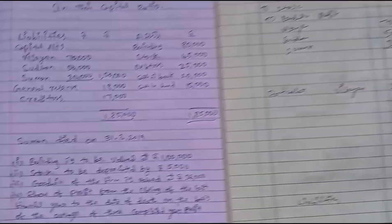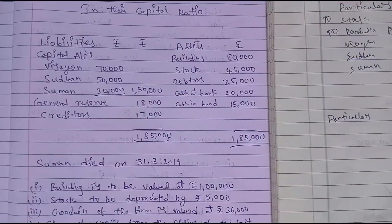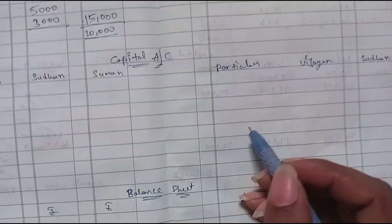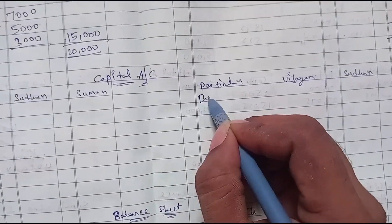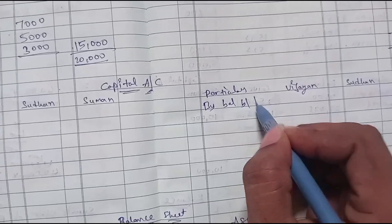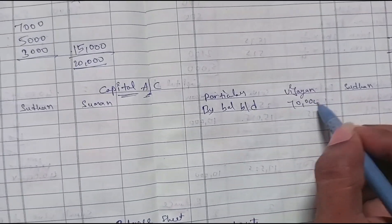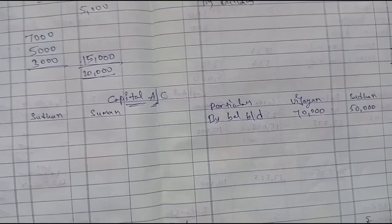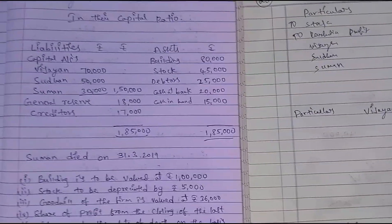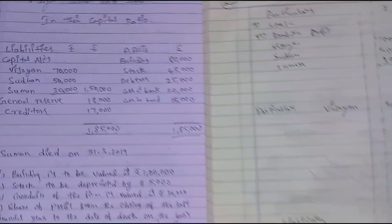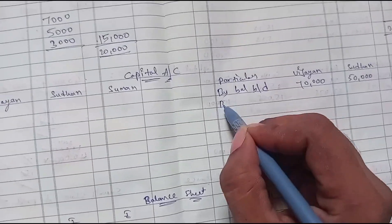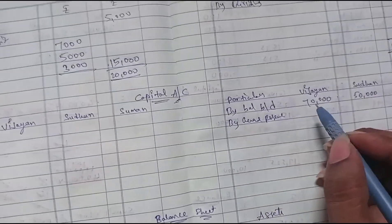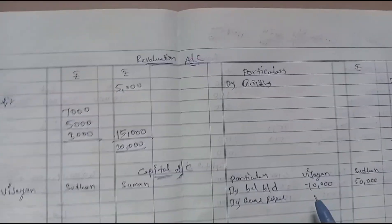In the Capital account, credit side by balance brought down: Vijayan 70,000; Sudhan 50,000; Suman 30,000. Now from the balance sheet, General Reserve is 18,000, distributed in the ratio 7 : 5 : 3.